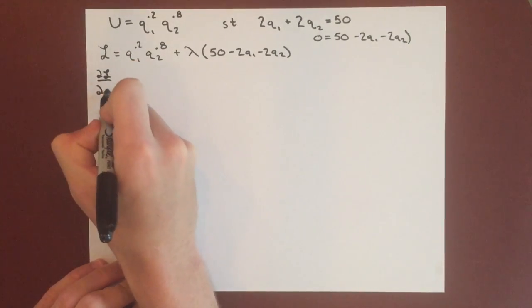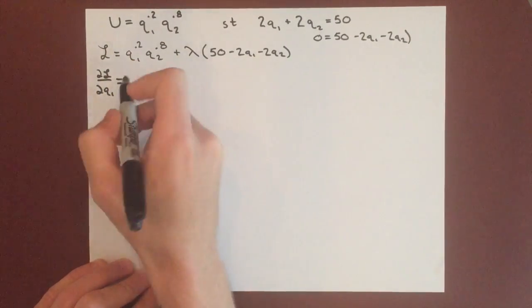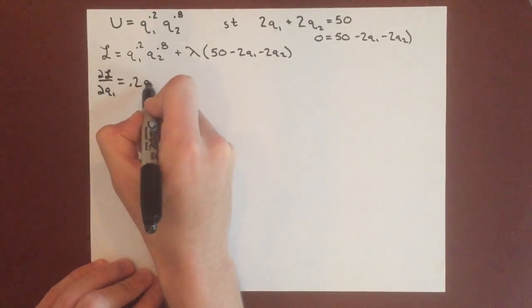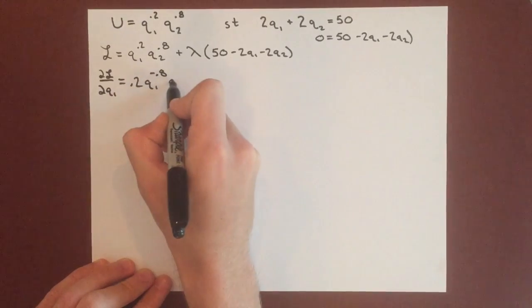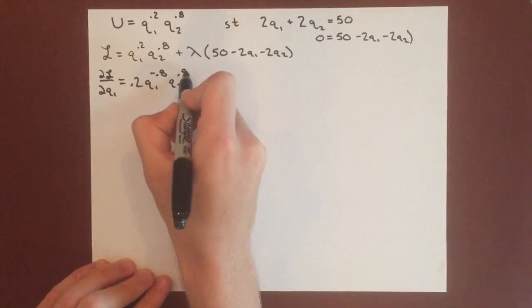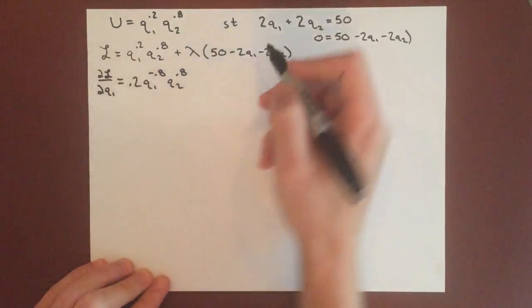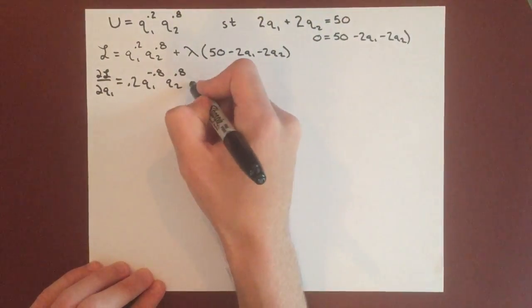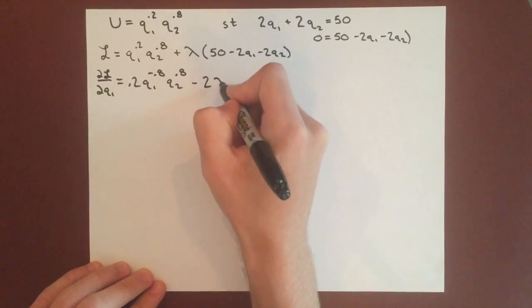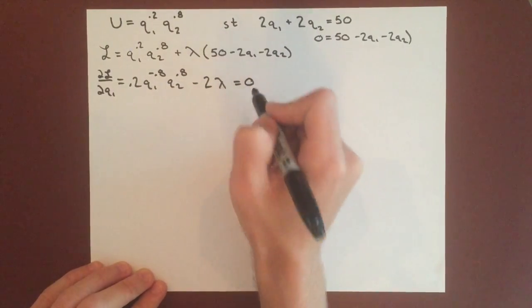0.2q1 to the negative 0.8, q2 to the 0.8, and then taking the derivative of the inside of this, we get negative 2 times lambda, and we want to set each of these to 0.